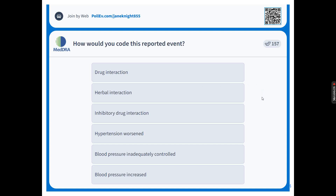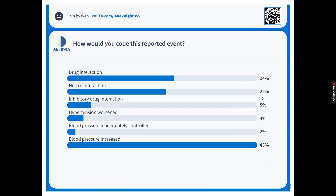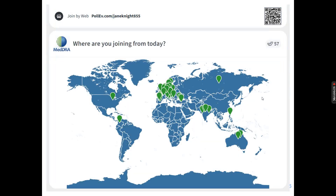Let's have a look at how your votes are lying. Blood pressure increased is clearly the most popular choice — and that was one that was mentioned. There's a split: hypertension worsened, blood pressure increased, inhibitory drug reaction, herbal interaction, and drug interaction have all been selected by some of you.